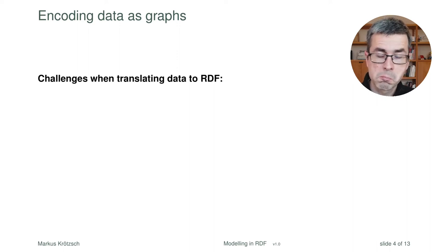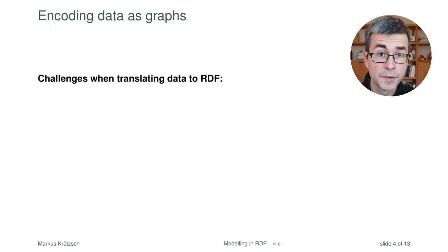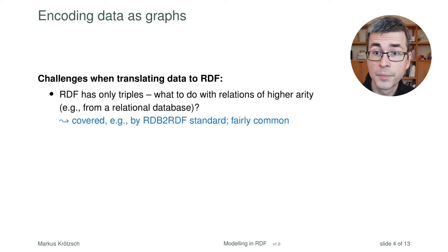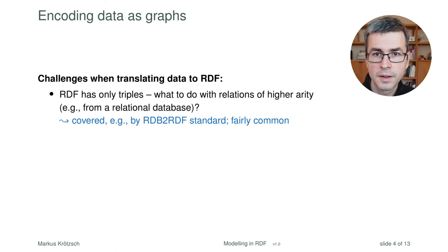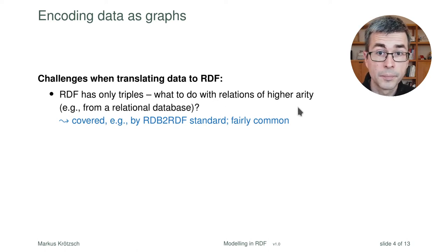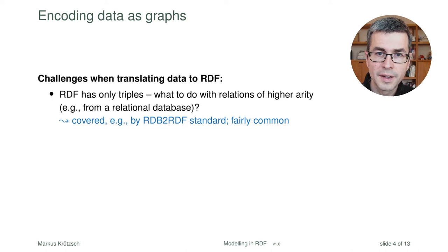What are the main challenges we encounter when modeling data in RDF? Graphs are very versatile, and what I say does not apply only to RDF graphs — all other graph databases and graph-based formats have similar versatility and similar challenges. Two particular challenges arise when using graphs to encode data. First, graphs have very simple structures — in RDF, edges are triples, a highly normalized form that is challenged if you want to represent relations of higher arity. For example, if you have a relational database with tables, tables can have dozens or even hundreds of columns, which can no longer be directly turned into a single edge.